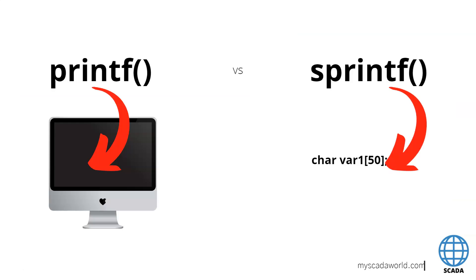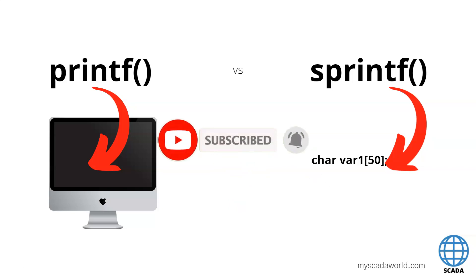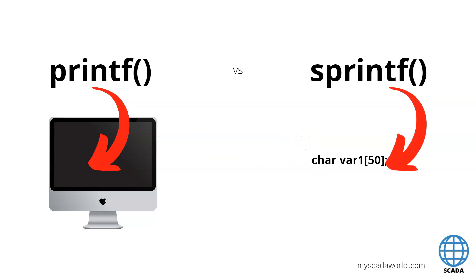Generally, if we talk about the printf and sprintf functions, we have one main difference: printf is used to display data on screen, while sprintf transfers data to variables inside our C script.